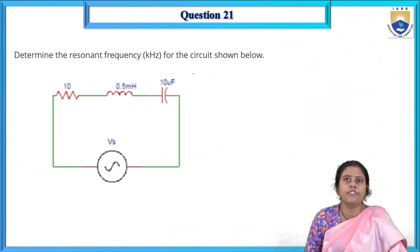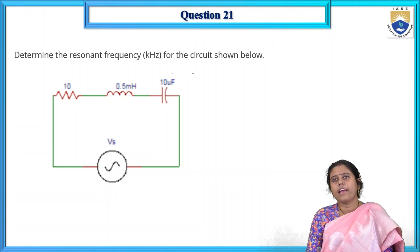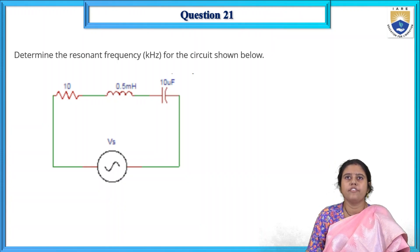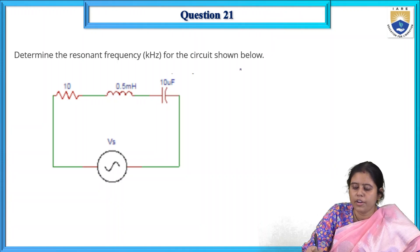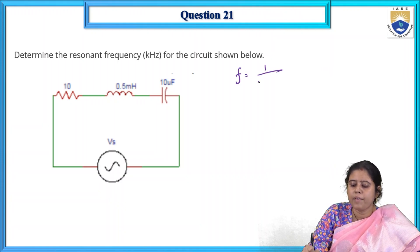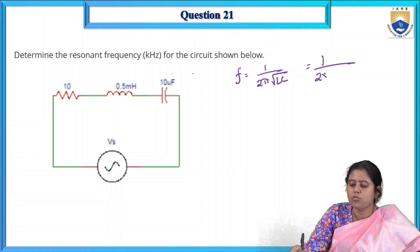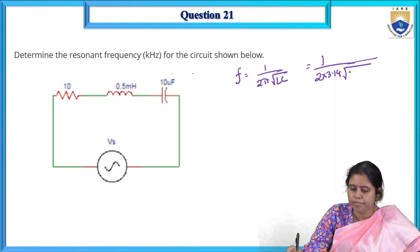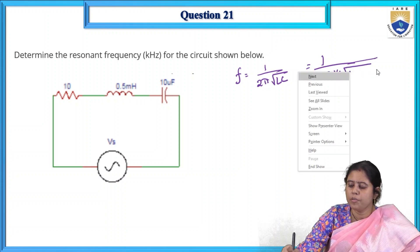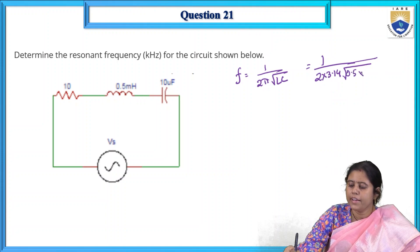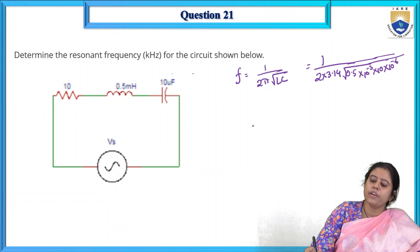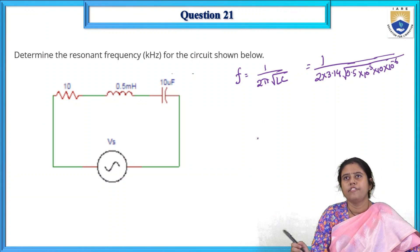Numerical problem 3: Determine the resonant frequency of the circuit. Using FR = 1/(2π√(LC)), with L = 0.5 mH and C = 10 μF (10 × 10⁻⁶), we can calculate the resonant frequency.